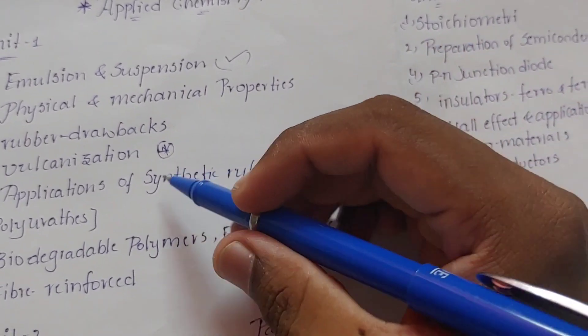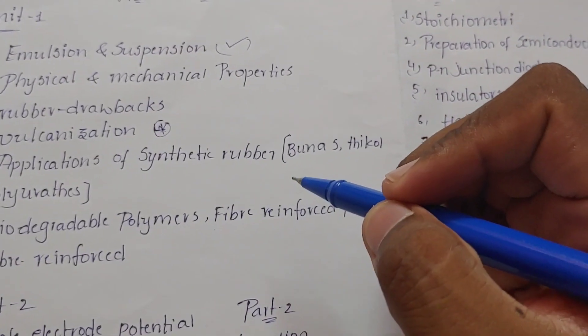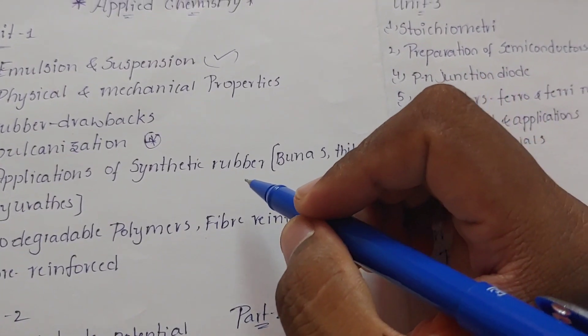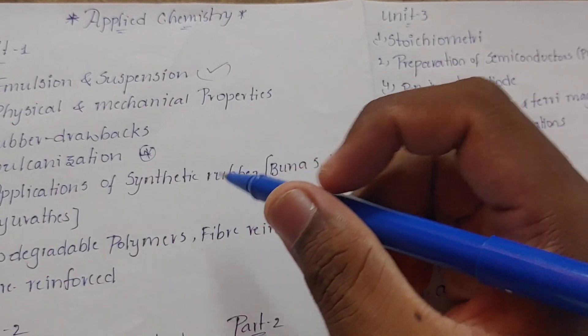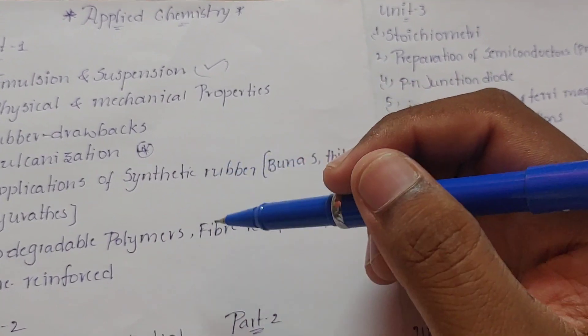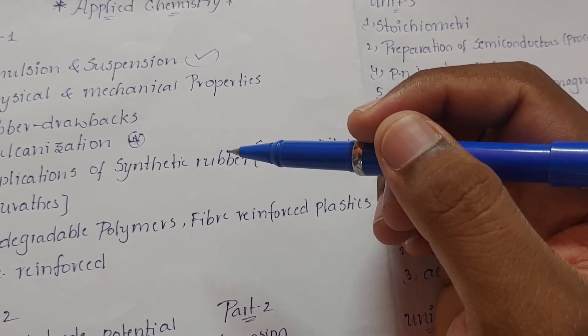Polyurethanes is a plastic rubber topic. Let's get started with the applications, properties, and preparations — these are the 3 main things to cover.